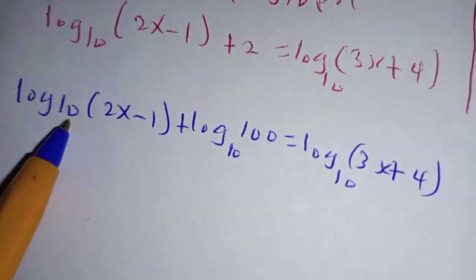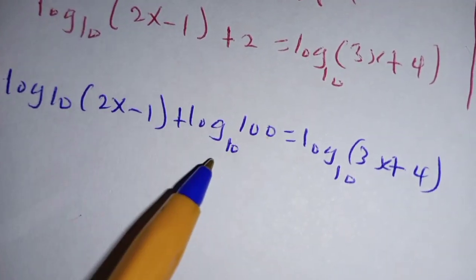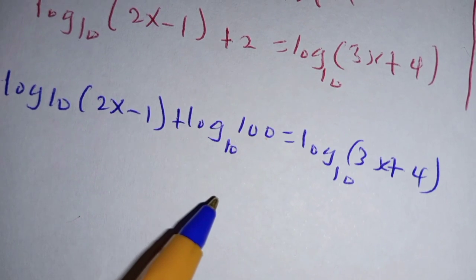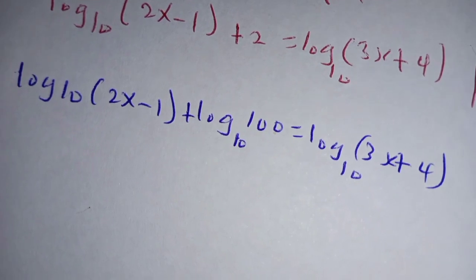So we have log to base 10 of (2x - 1) plus log of 100 to base 10, which is equal to log of (3x + 4) to base 10. Then we make use of this rule, the law of logarithm.